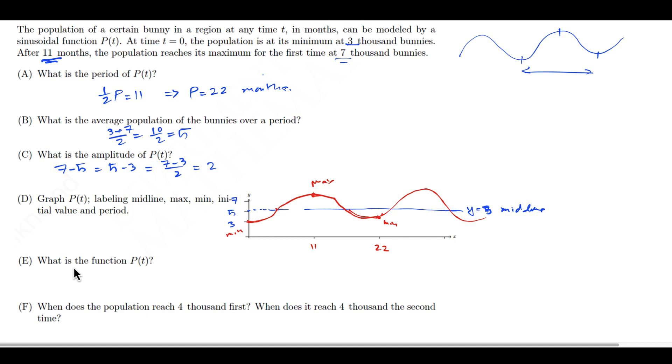The next thing is, what is the function P(t)? It's asking you to actually give the rule of the function. I'm looking for P(t) equal to A times sine of B times T plus C plus D. D is going to be the midline, which is 5. A comes from the amplitude, which is 2.